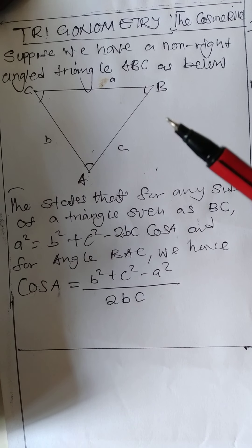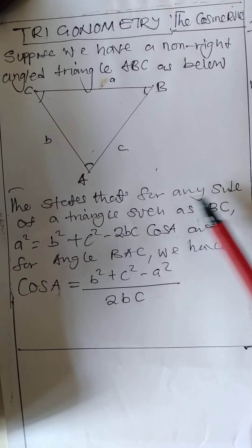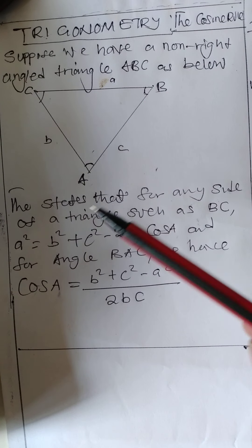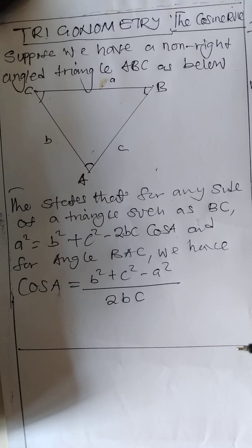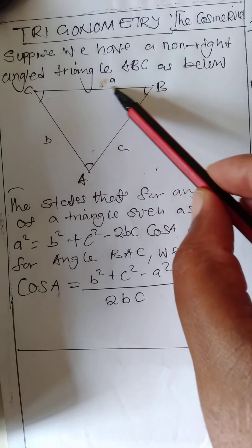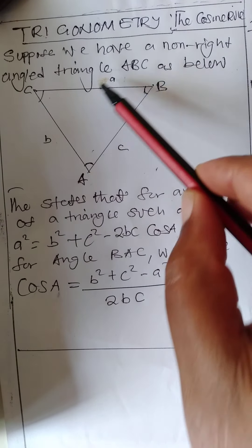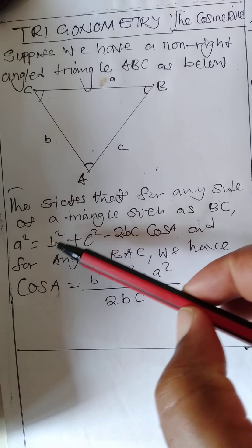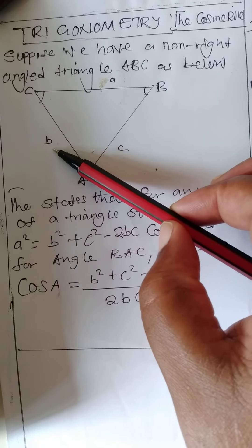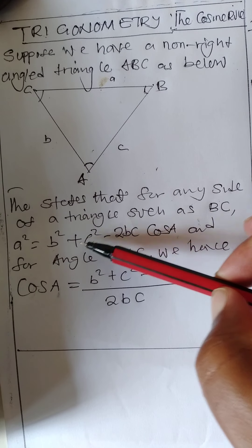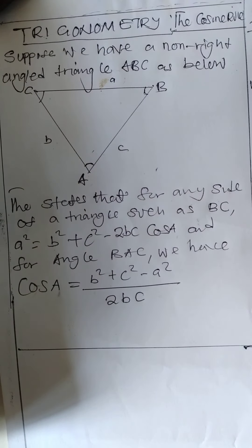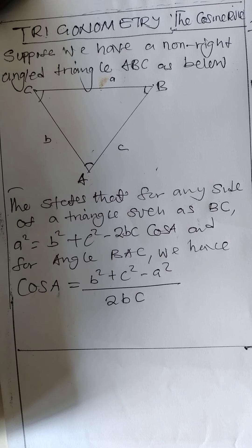What does the cosine rule state? For any side of a non-right-angle triangle, such as BC, if we want to find that side, we square it and equate it to the sum of the squares of the other two sides. So we say a squared is equal to b squared plus c squared minus two bc cos A.